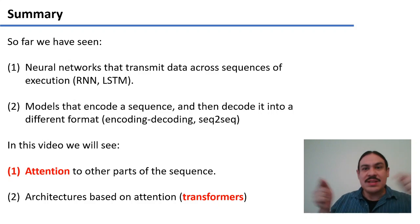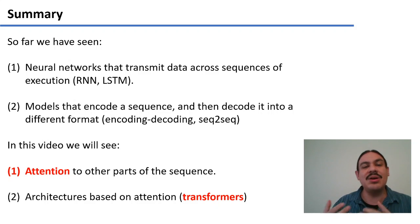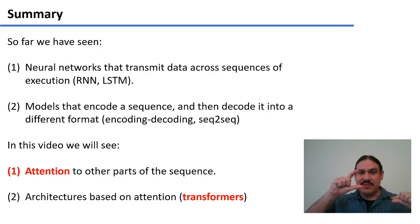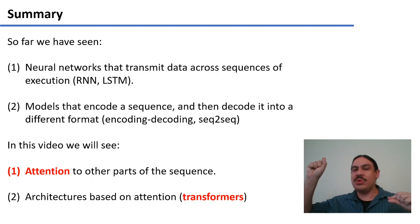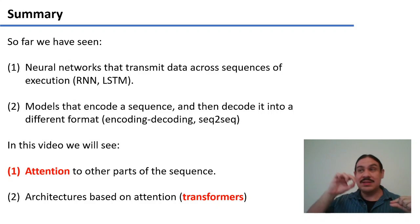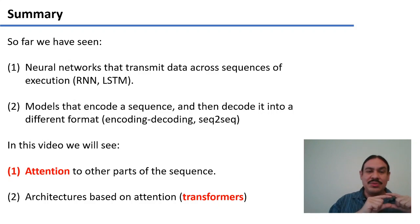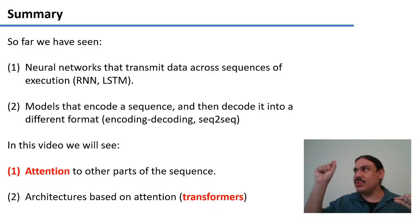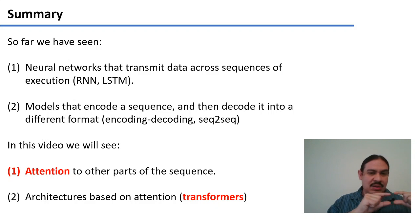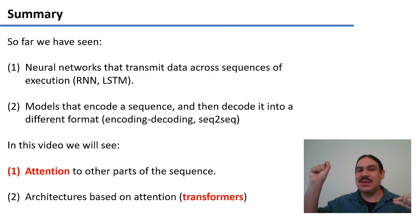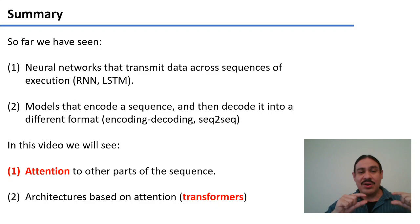So we have neural networks that can transmit across sequences, and we also have architectures that can encode a sequence into an intermediate form and then decode it into some other form. We call these encoding-decoding architectures, and in general they deal with sequences to sequences, like the words in a question to the words in an answer, or the words in an article to the words of the summary of the article.